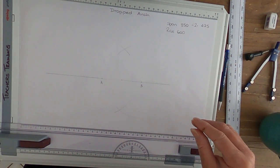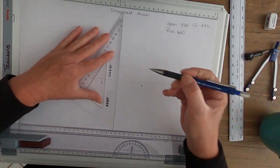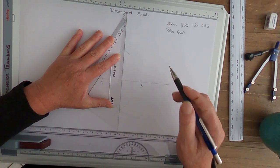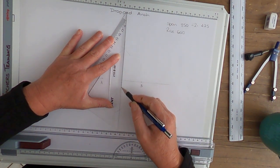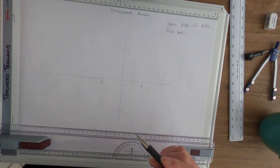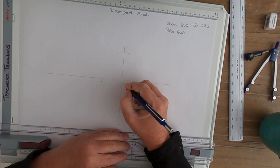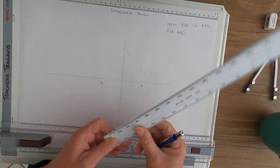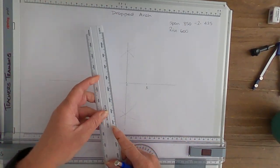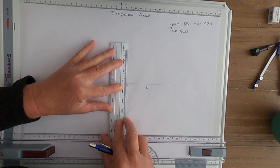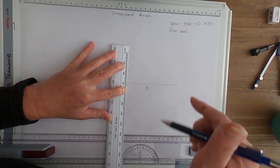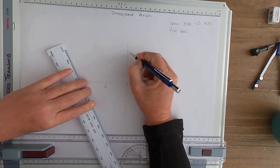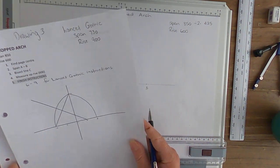Then we get our set square and align through the two arc points where they meet. Now we measure up our rise, so this is C here. We're going to measure up our rise at 600, 600, and that is D. Now I'm going to go to my Lancet Gothic instructions.